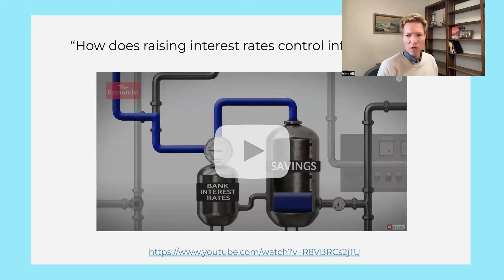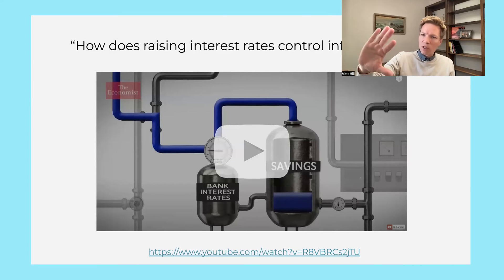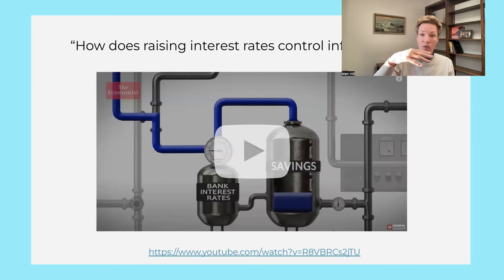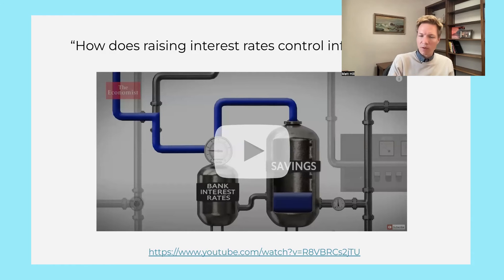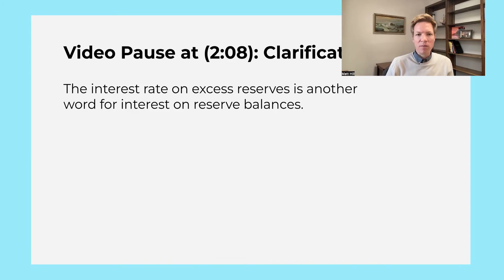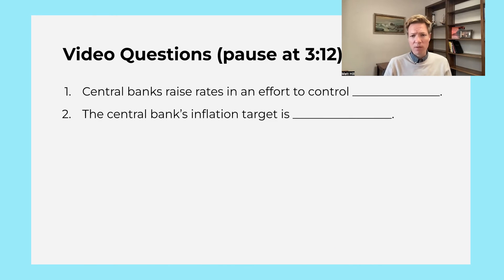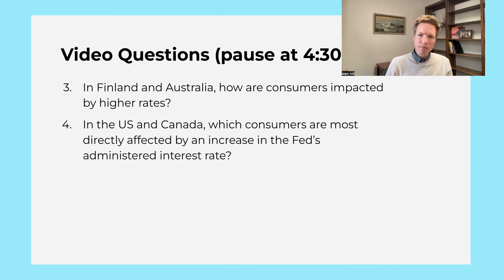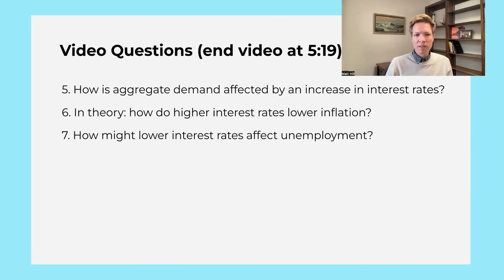We have a really good video from The Economist that goes through this process. As we've seen inflation in recent years, the Fed and other central banks have been raising their short-term rates, trying to cool inflation. This video does a good job and has a global perspective, so it's applicable in other settings. It explains why raising the interest rate affects inflation. We have various pause points to ask questions, showing how that's different in different countries, and tying this back to how it affects aggregate demand and relating it to the dual mandate: how do higher interest rates lower inflation, and how might lower interest rates affect unemployment?